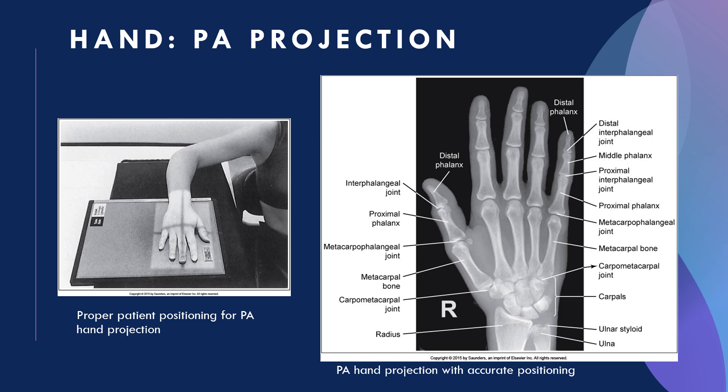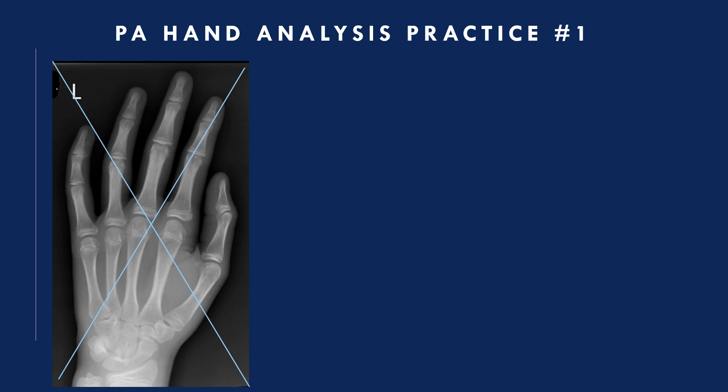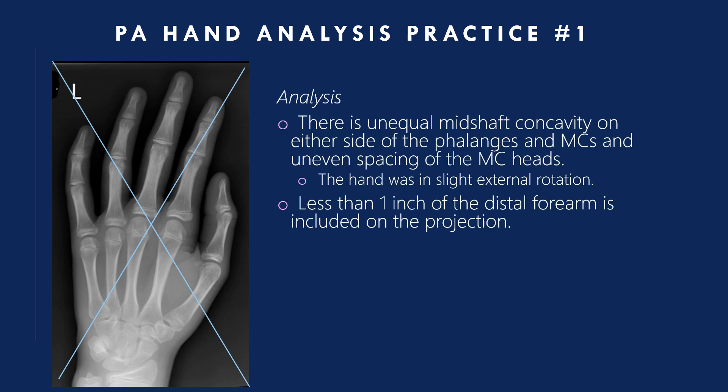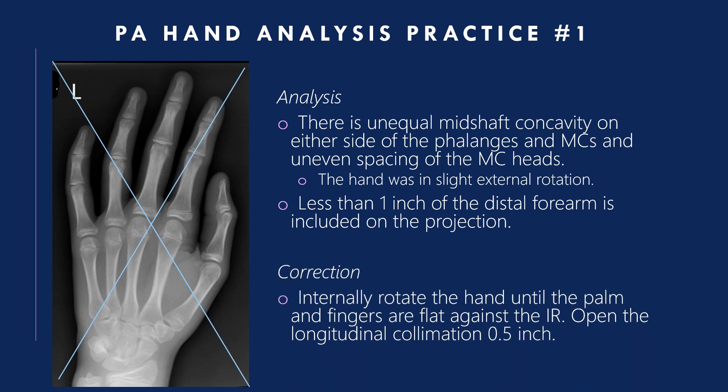PA projection of the hand: here are examples of proper accurate positioning. Analysis practice one: there is unequal mid-shaft concavity on either side of the phalanges and metacarpals, and uneven spacing of the metacarpal heads — the hand was in slight external rotation. Less than one inch of the distal forearm is included. Correction: internally rotate the hand until the palm and fingers are flat against the IR, and open the longitudinal collimation a half inch.